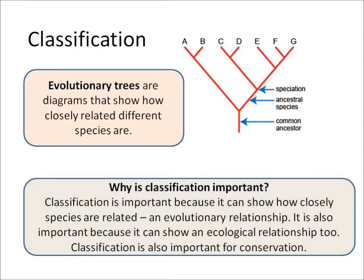In terms of classification, we have a diagram called an evolutionary tree, and the one shown here we can see seven different species: A, B, C, D, E, F, and G. What an evolutionary tree can show us is how closely those species are related. So we know that A and B are very closely related, and F and G are very closely related, and we can also see that all seven species here all share a common ancestor.